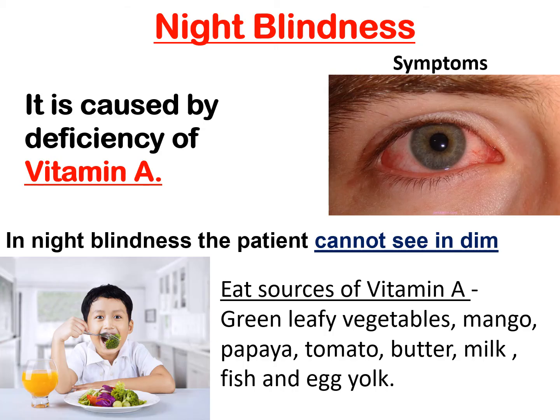Another non-communicable disease is night blindness. It is caused by the deficiency of vitamin A. In night blindness, the patient cannot see in dim light. Eat sources of vitamin A to cure this disease: green leafy vegetables, mango, papaya, tomato, butter, milk, fish, and egg yolk.